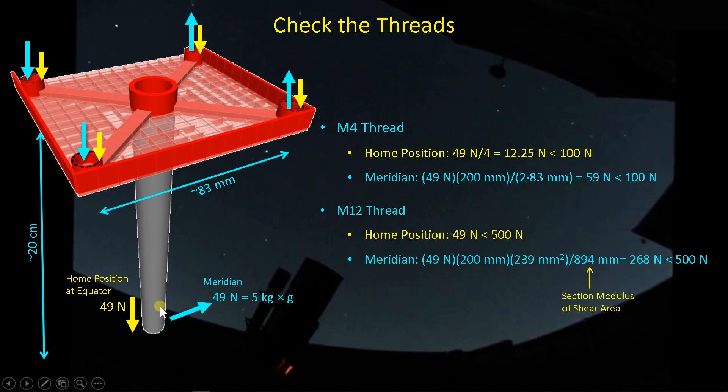Now the M12 thread, home position, all 49 newtons are coming into the thread up here at the top. We have 500 newtons that we can carry using this fairly low-strength aluminum alloy that I'm assuming here. When we're at the meridian, things get a little tougher. It's the same 49 times 200. Now we're multiplying it times the A sub S, that shear area, divided by what's called a section modulus. We get 268 newtons, which is still less than 500 newtons. So actually, these threads are in pretty good shape. Even if you went down to a yield stress of 6 kSI, a very weak aluminum, these threads can handle the load of the 5 kilogram counterweight.